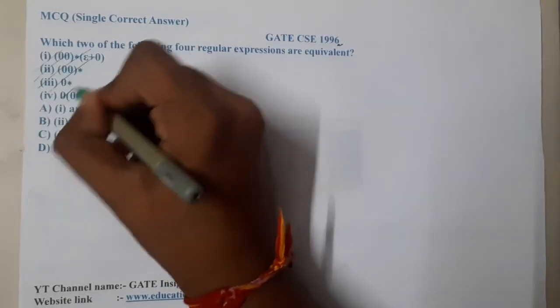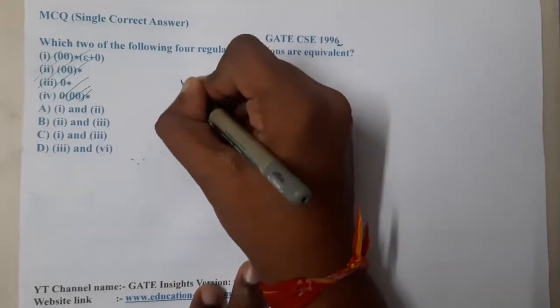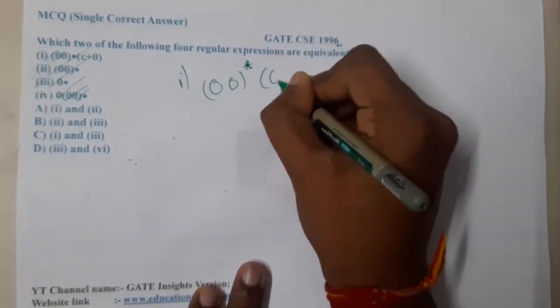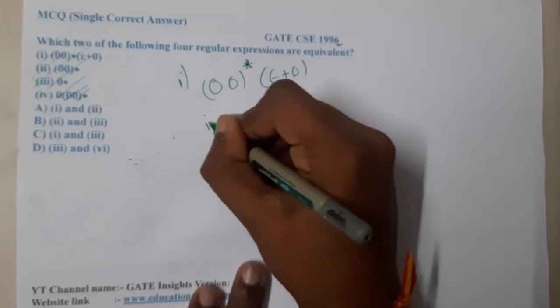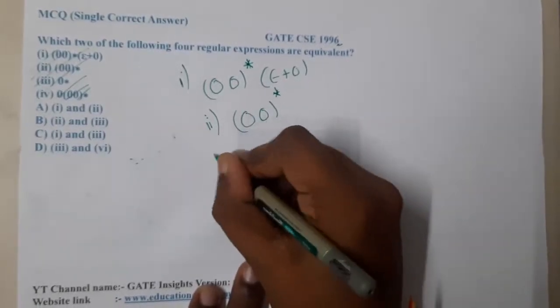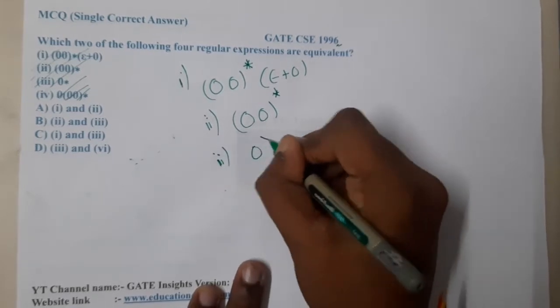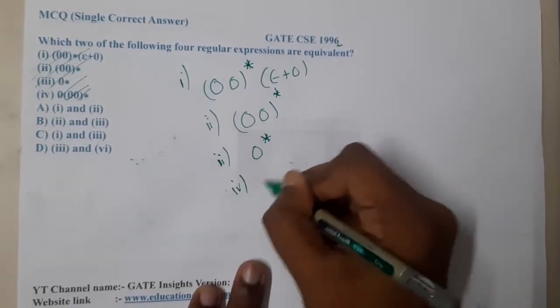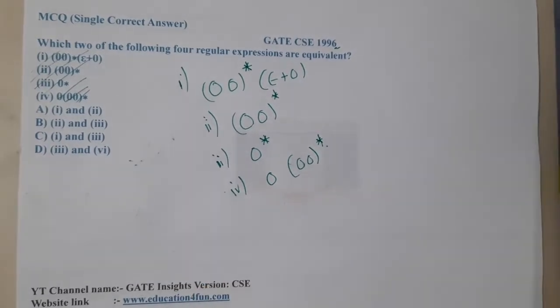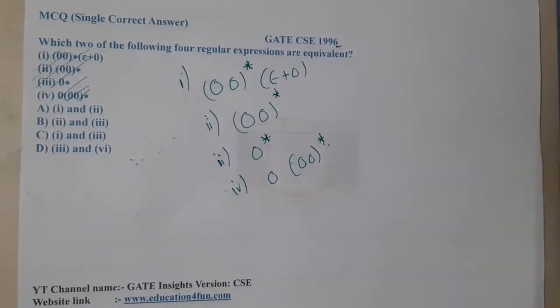In this particular subject, wherever representations are there, there is a high chance that the representations might have a lot of printing mistakes. So, the second one is (00)*, the third one is 0*, and the fourth one is (000)*. I have observed a few things here.